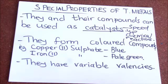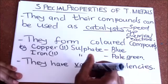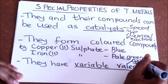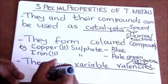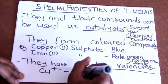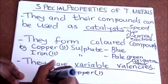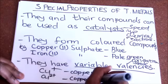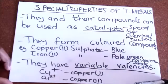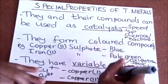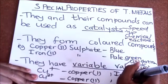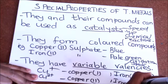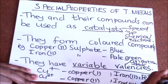The other property is that transition metals have variable valences. Valence means the oxidation state or the charge. For example, we can have copper(I), which is Cu⁺, and copper(II), which is Cu²⁺. Similarly, we can have iron(II), which is Fe²⁺, and iron(III), which is Fe³⁺.